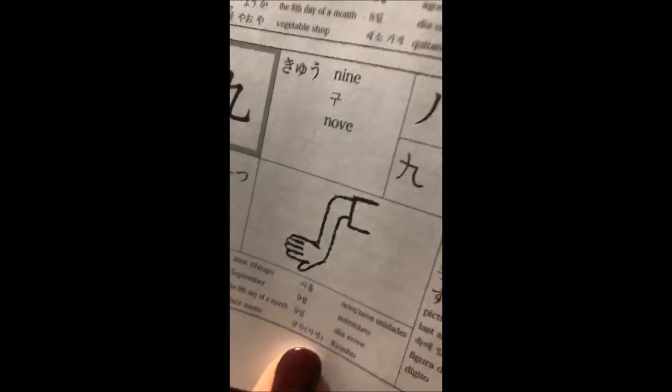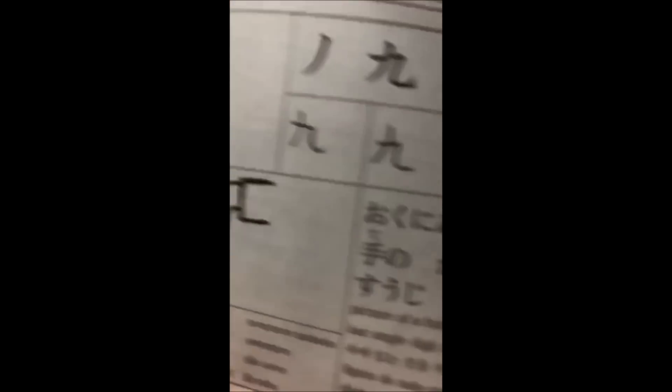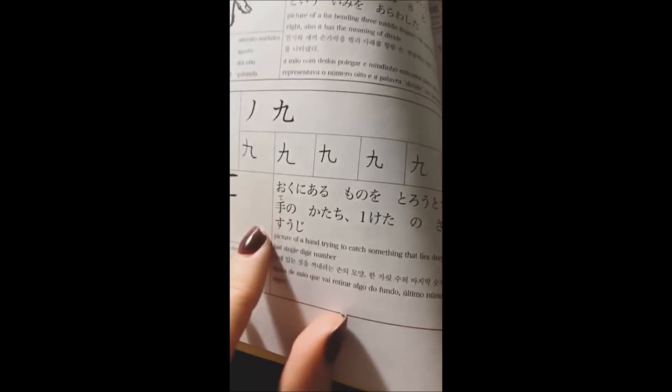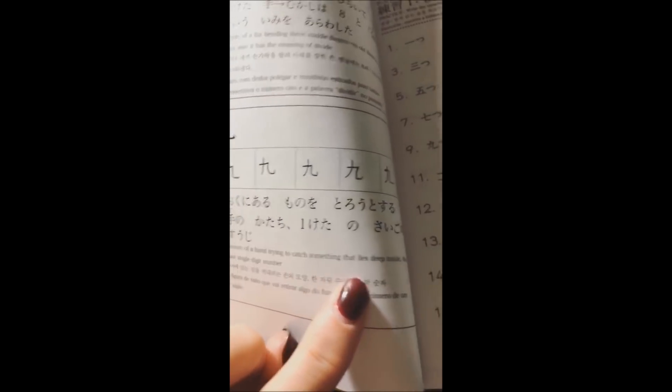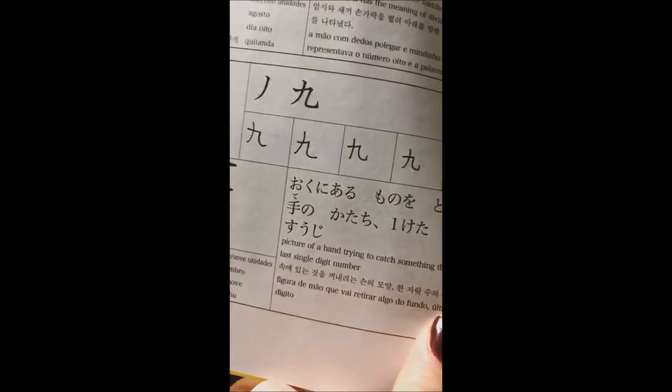I'm... what? What? How does this... The explanation of the picture is just a picture of a hand trying to catch something that lies deep inside the last single digit number.